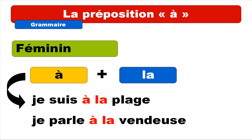So for the first one, let's try to make the liaison and we'll get: je suis à la plage. Repeat: je suis à la plage. And then the second one: je parle à la vendeuse. Repeat: je parle à la vendeuse.